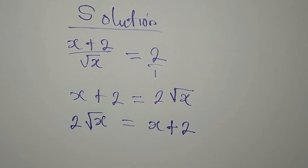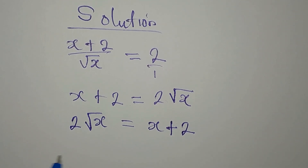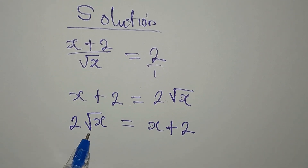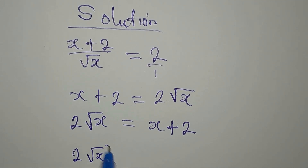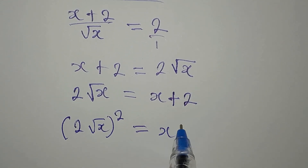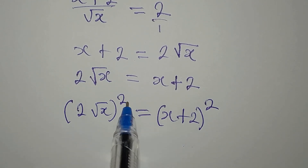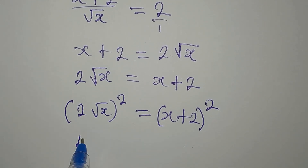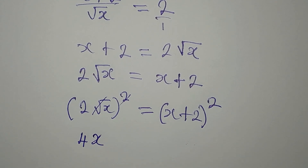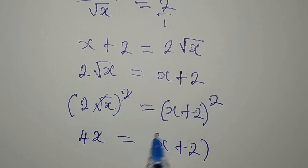Next, I'm going to square both sides — we do this so that the square root is eliminated. Squaring 2 square root of x gives us 4x, since 2 squared is 4 and the square root cancels with the square. On the other side, we square (x + 2).